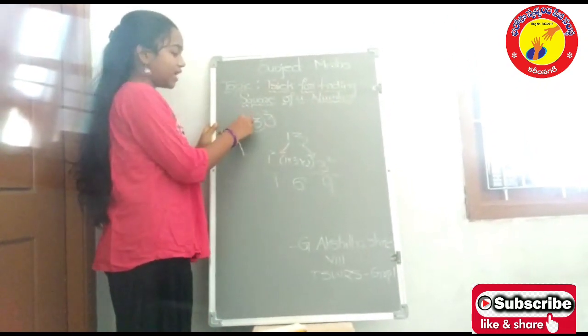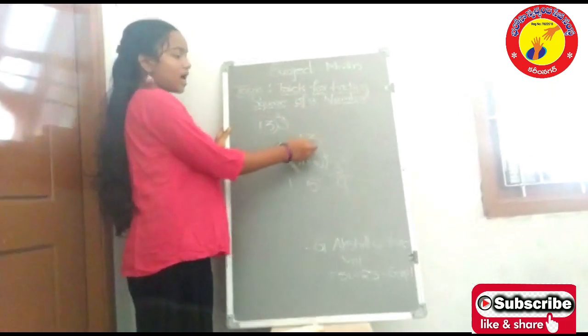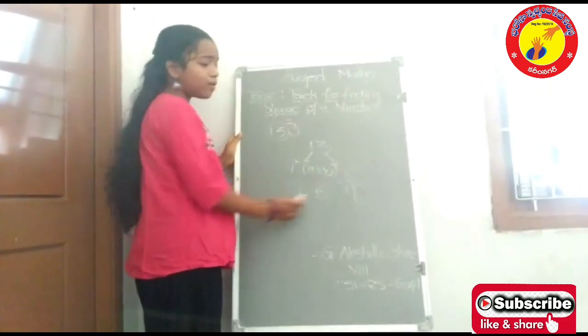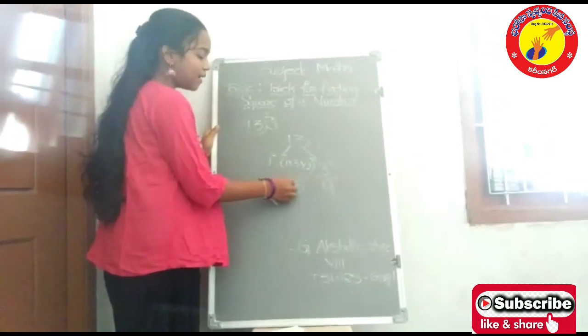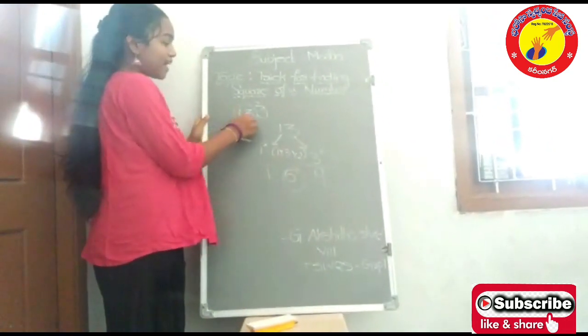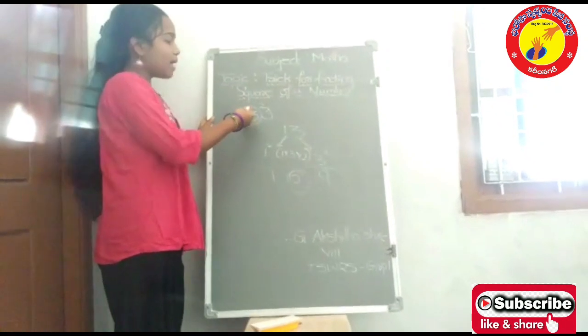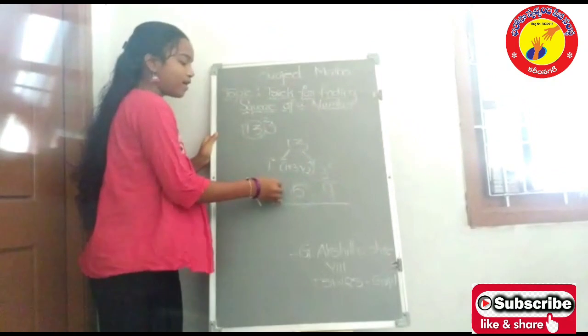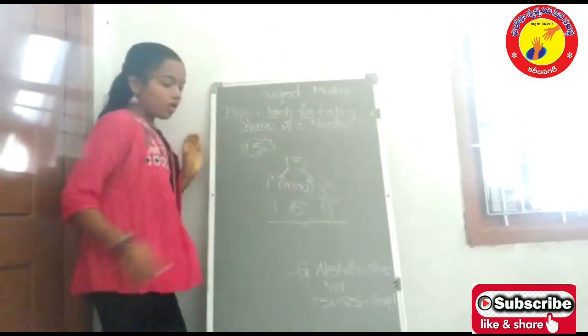So, the process is, first, find the square of a tens digit and write it down. And the squares of a unit digit and write them in both corners. And the middle number is, multiply both the given numbers and multiply them by 2 and gives you the middle number. So, this is the number 1, 6, 9.